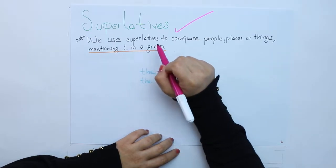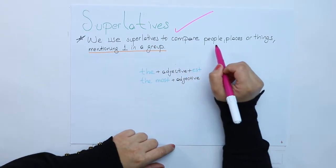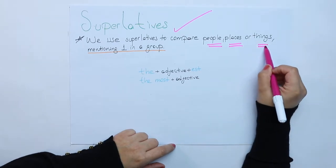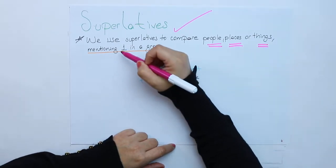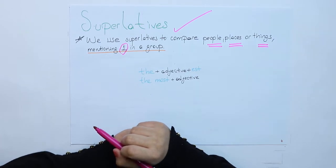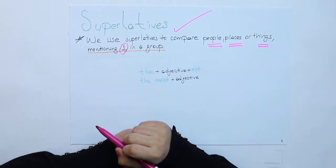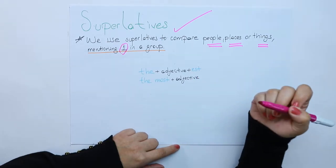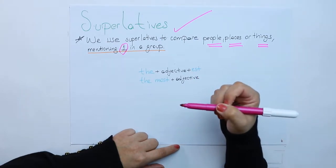We use superlatives to compare people, places, or things matching in one in a group. Remember that we were comparing two people, places, or things in the comparatives.